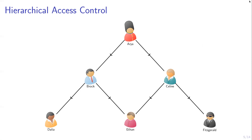Here is an example of hierarchical access control. In this diagram, an arrow represents that a user is above another user in the hierarchy. For example, Brock has access to all the files that Dahlia can access, but also ARIA has access to all the files that Dahlia can access, because ARIA is above Brock, who is above Dahlia. This relation is transitive. Note that Selene is not above Dahlia in the hierarchy, because there is no path from Selene to Dahlia, so there may be files that Dahlia can access but Selene cannot, and vice versa.